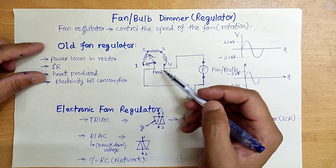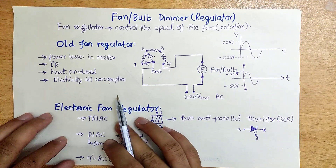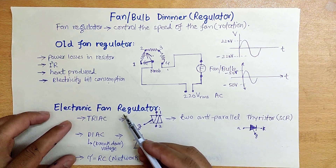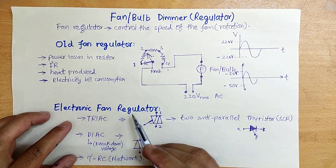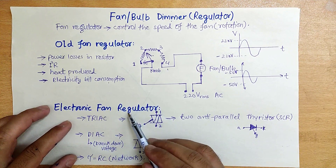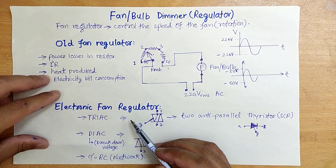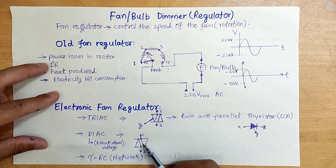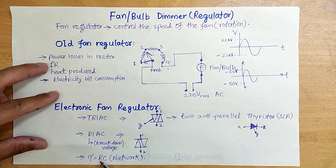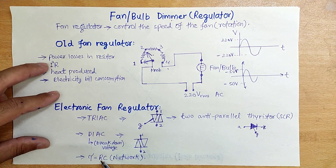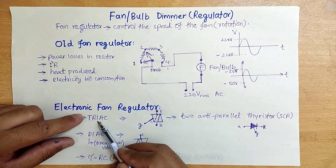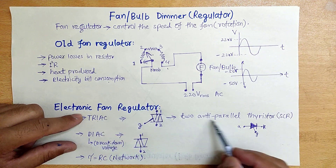The old-fashioned regulators consisted of a resistor network. Nowadays, electronic components are very commonly used, so now I will discuss the electronic fan regulator, which mainly consists of a TRIAC, a DIAC, and an RC network used to increase or decrease the time constant of the circuit.